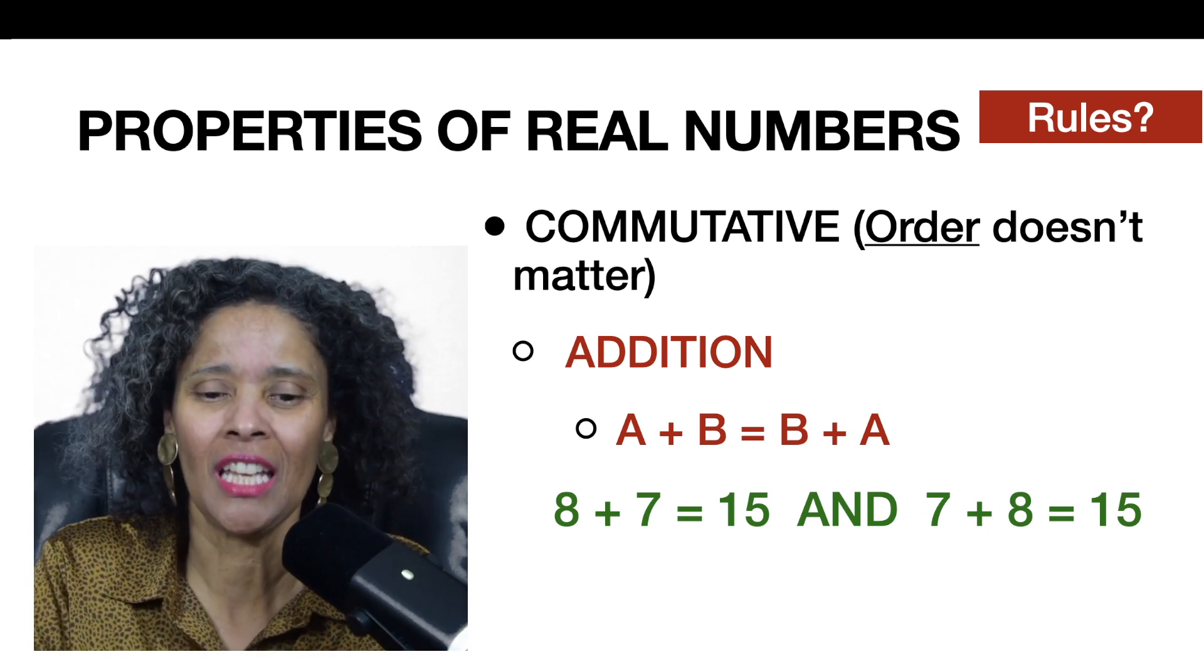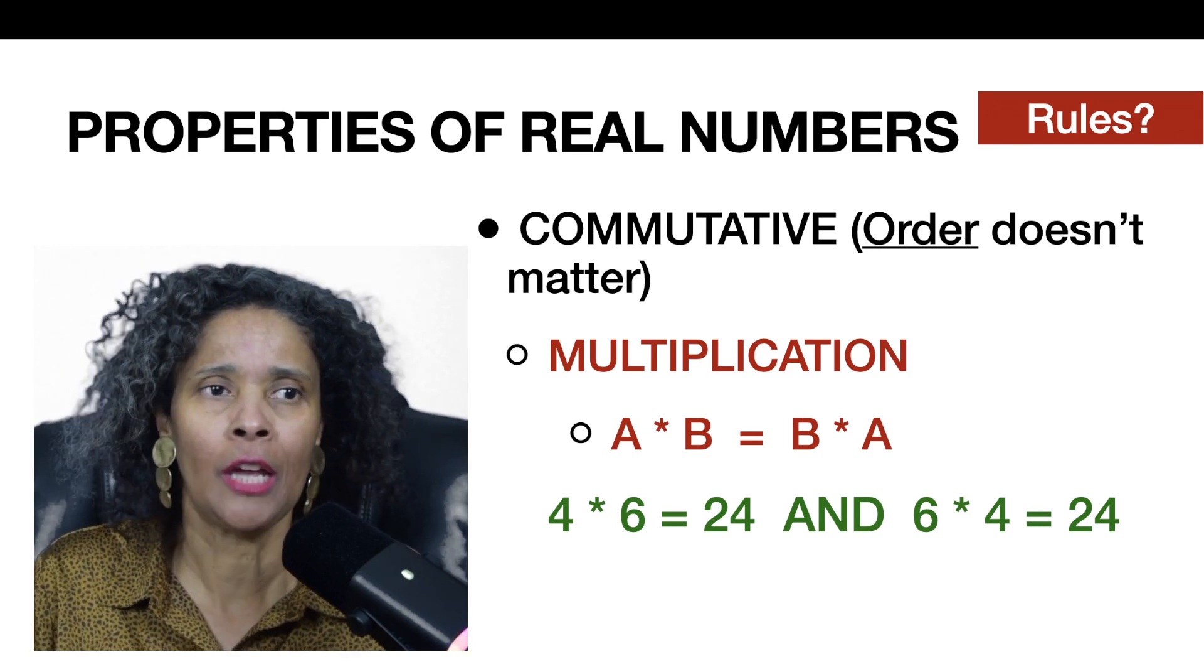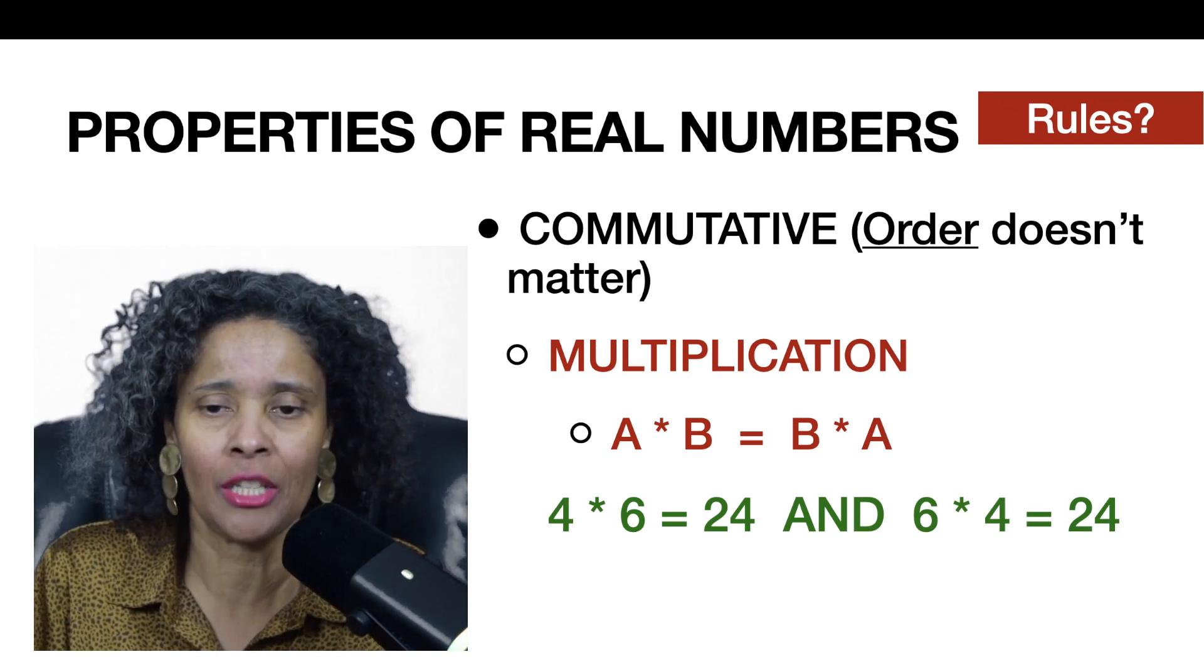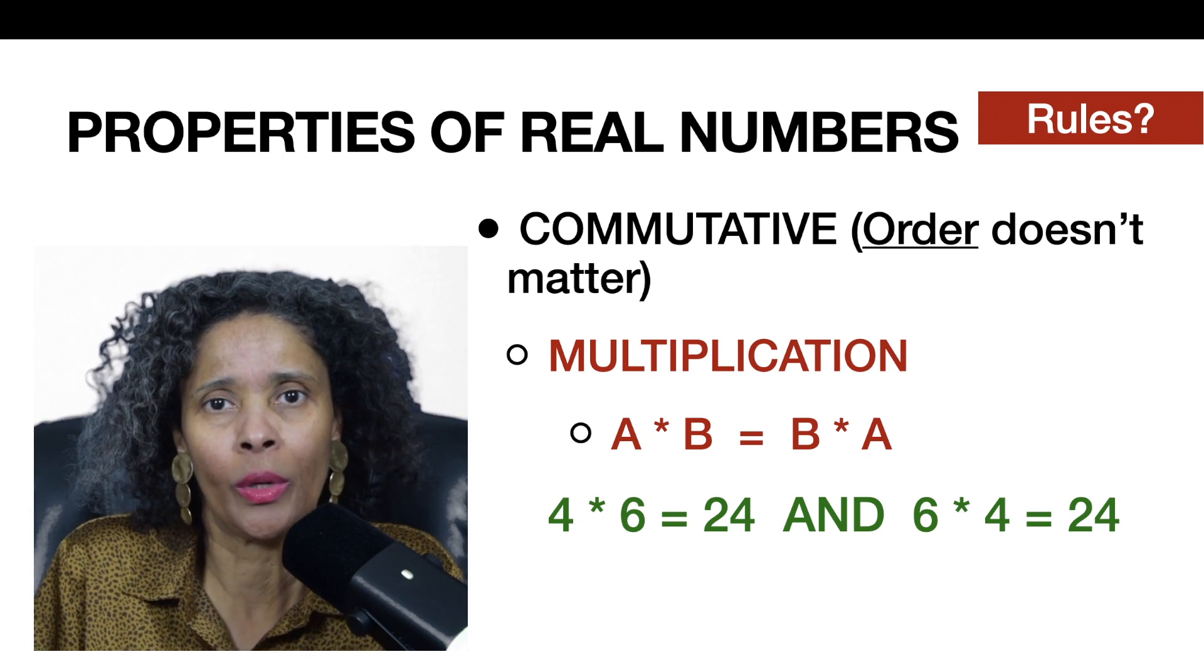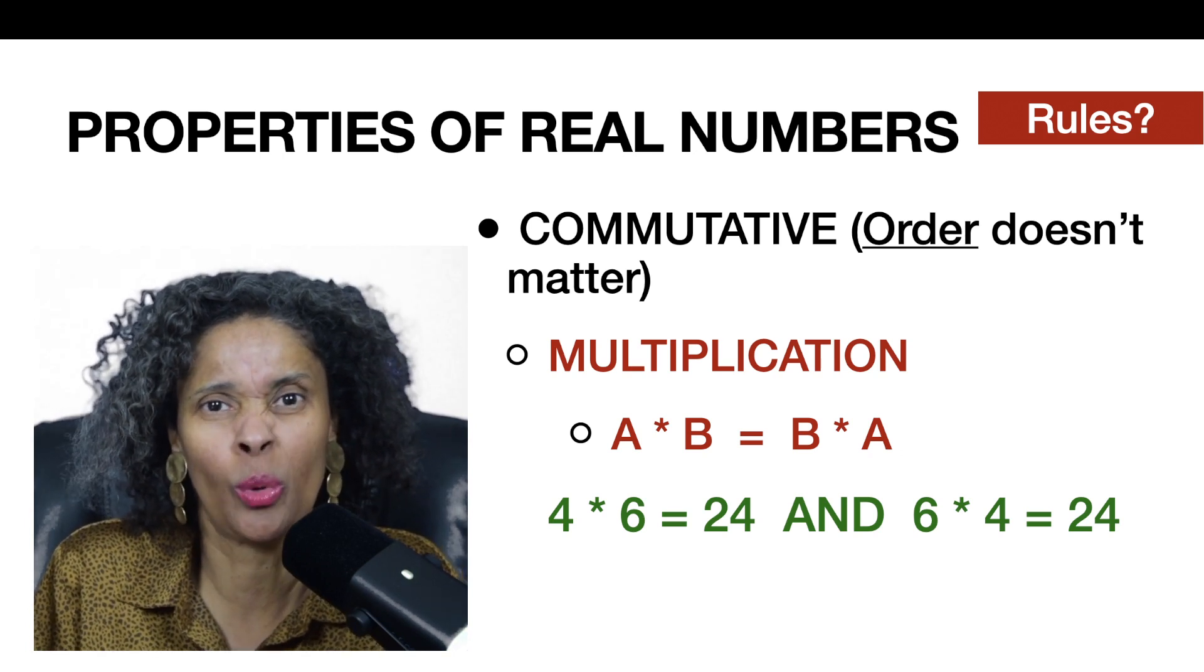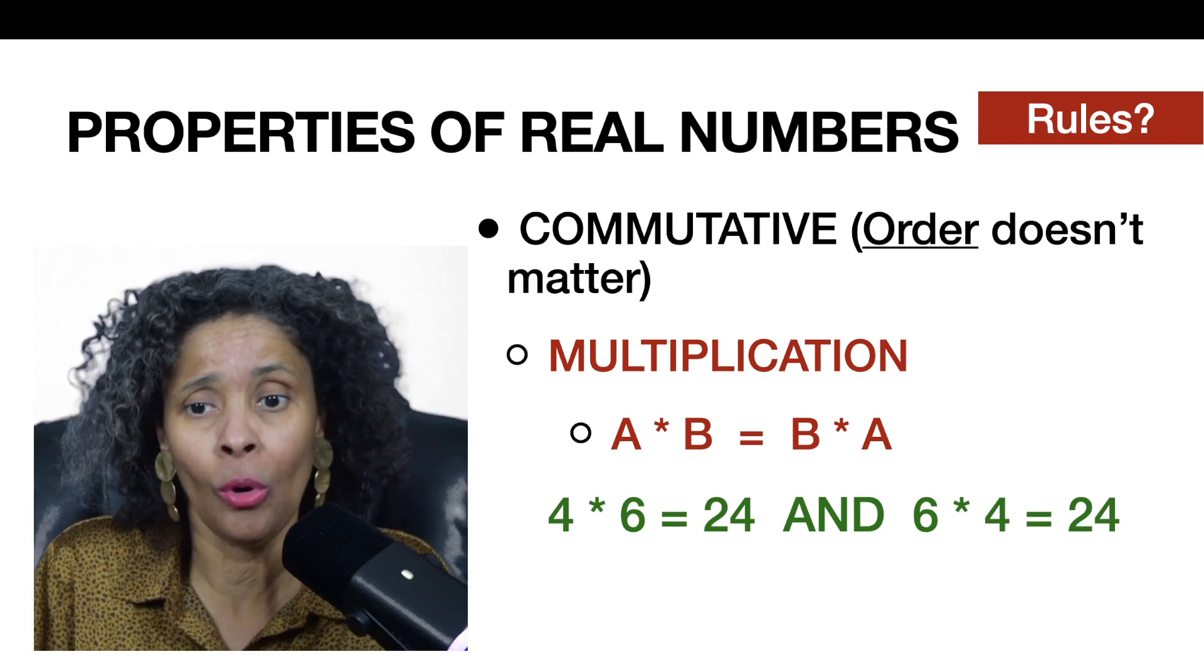Then when you think about it, if I get to multiplication, multiplication is the exact same way. If I have four groups of six things in each group, so I'm going to have 24 at the end. Four times six is going to be 24. And if I take six times four, I'm going to have 24.